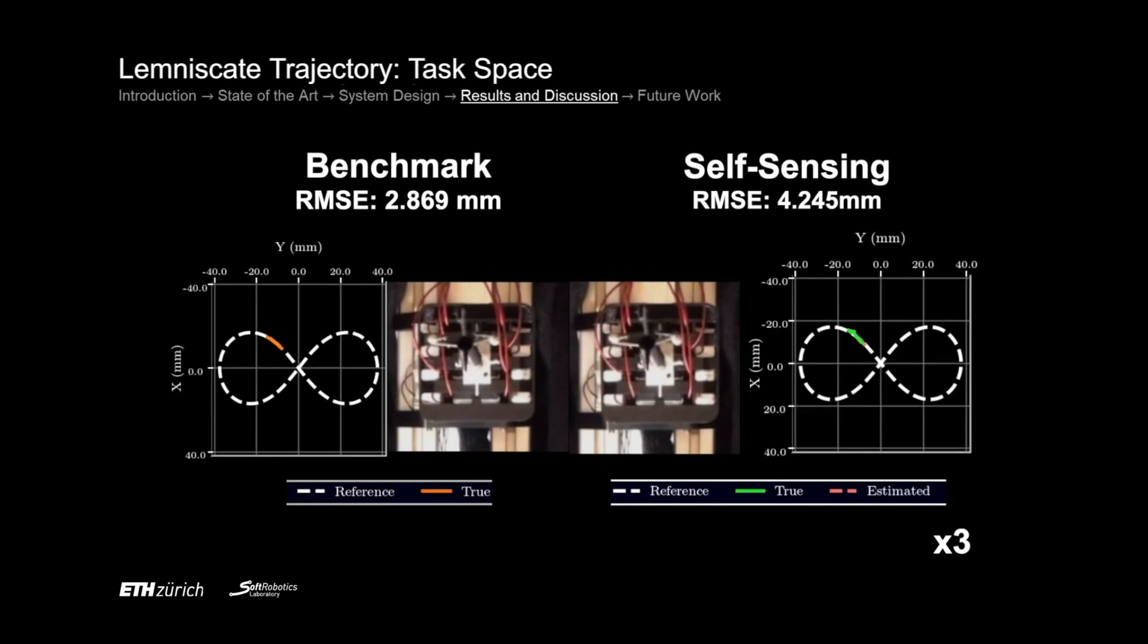Here you can see the results of the trajectory tracking of both the motion capture and the self-sensing control. Although we are able to track the trajectory with self-sensing, the performance is worse than the benchmark, primarily due to the estimation model's limitations in handling noisy self-sensing data.